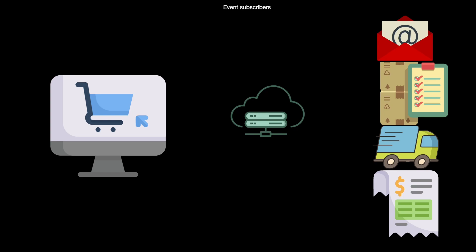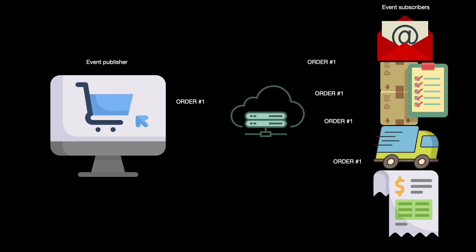Let's rearrange the diagram. In this new event-driven setup, the e-commerce system becomes the event publisher, and the four systems become the event subscribers. The e-commerce platform no longer needs to make several outbound calls to each individual service. Instead, after the purchase is completed, it sends an event to the event router indicating that a purchase has been completed, along with any necessary details about the purchase to allow other services to complete their tasks.